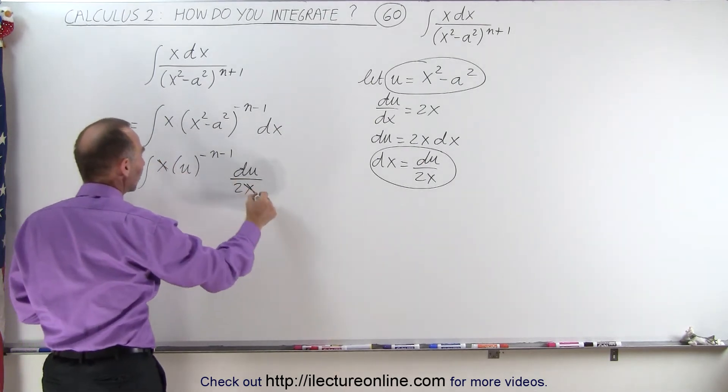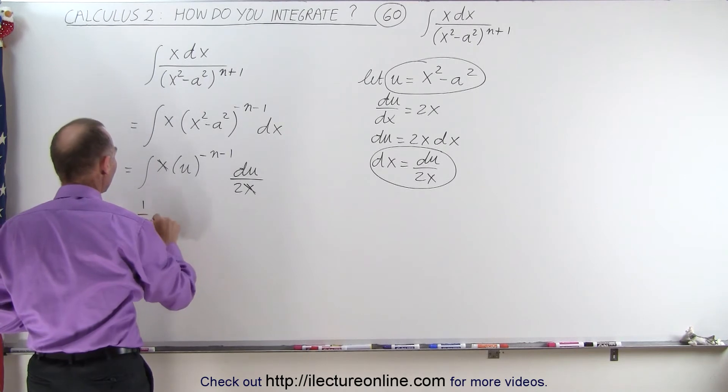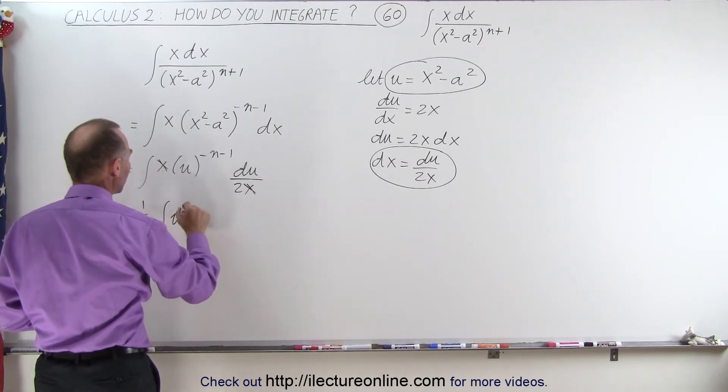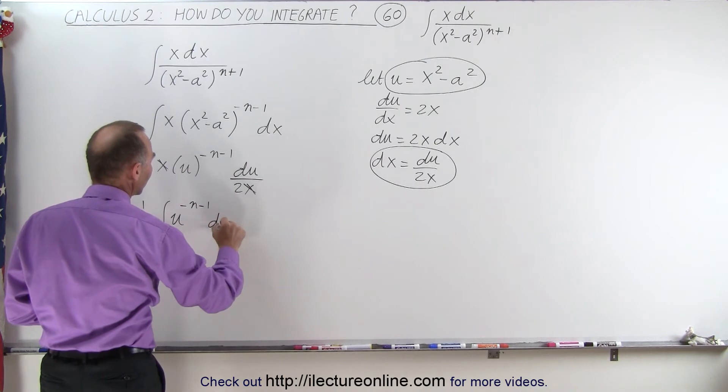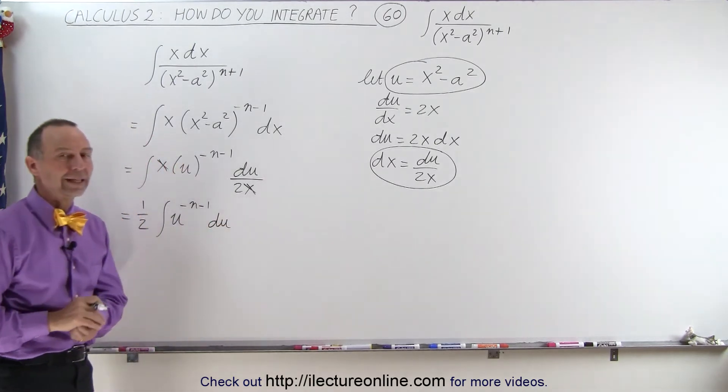The x is canceled out, the 2 can come outside, and we have 1 half times the integral of u to the minus n minus 1 times du, and this we know how to integrate.